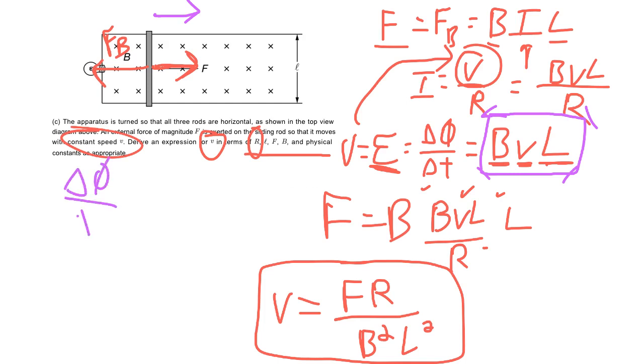...our flux over time. Remember flux is B times A, so you have BA over t. So what is A? And again, this is a change, so we're changing our area. Our A is going to be the length of this...